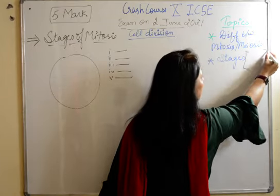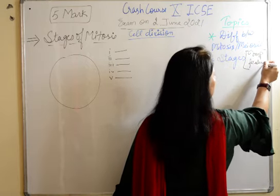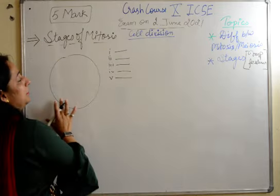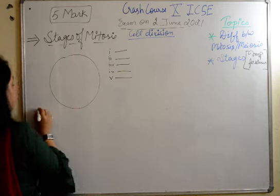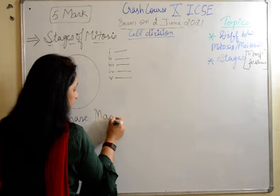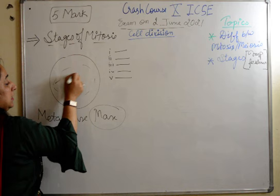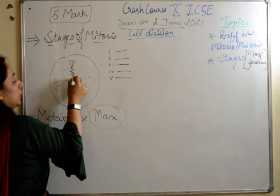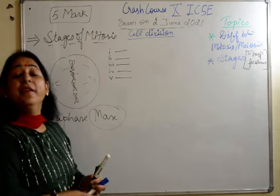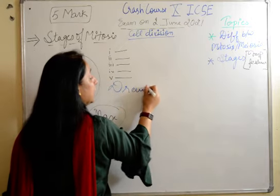Along with the stages, one very important thing you must learn is the important features about each and every stage. Generally in the 5-marker, the chances of metaphase being given is maximum — most of the time the stage given in the paper is metaphase. They ask you to identify the stage and also to draw the stage.